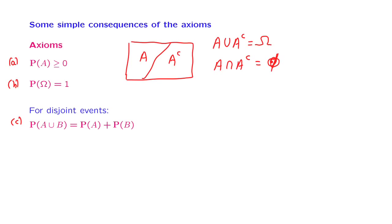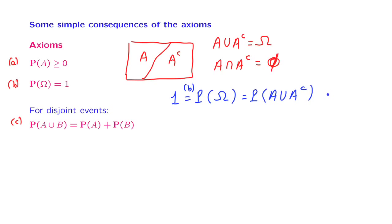Now we argue as follows. We have that the probability of the entire sample space is equal to 1 — this is true by our second axiom. The sample space can be written as the union of an event and the complement of that event, which is a set-theoretic relation. Since a set and its complement are disjoint, we can apply the additivity axiom and write this probability as the sum of the probability of event A with the probability of the complement of A. This is one of the relations we had claimed, and which we have now established.